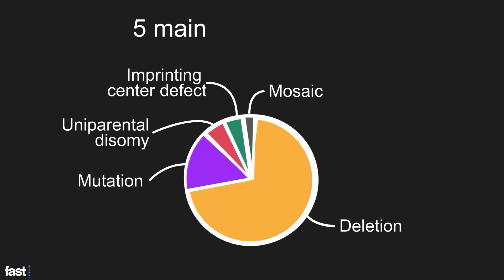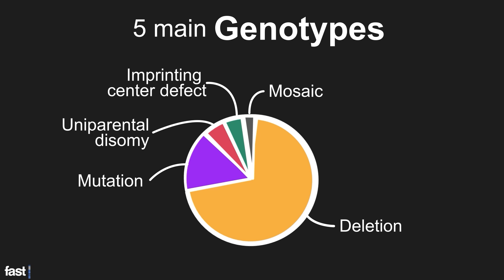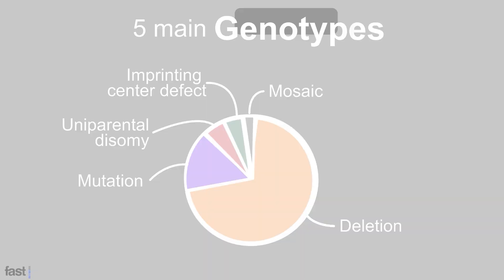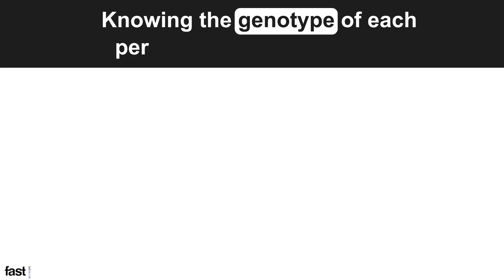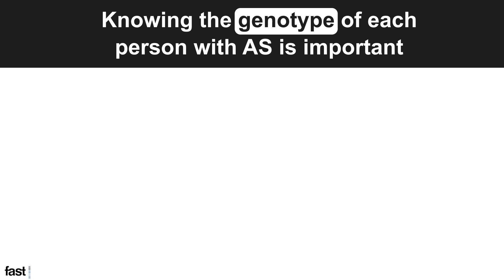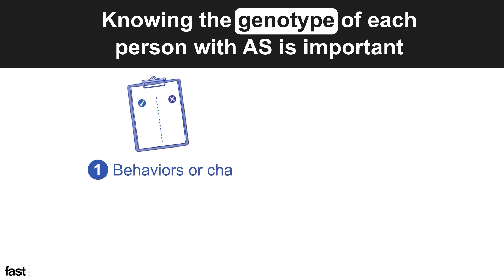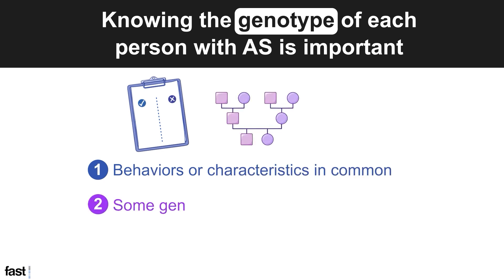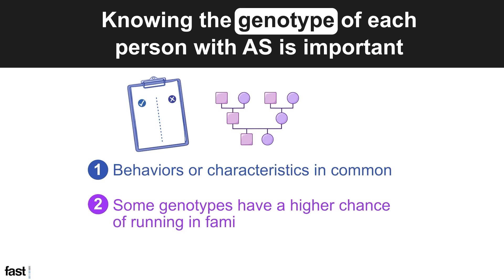There are five main genotypes that cause AS. Knowing the genotype of each person living with AS is important. Although each individual living with AS is unique, people with the same genotype may have certain behaviors or characteristics in common. Another reason for identifying the genotype is that some genotypes have a higher chance of running in families. Doctors and genetic counselors can use this information to determine the chance of other family members inheriting AS.